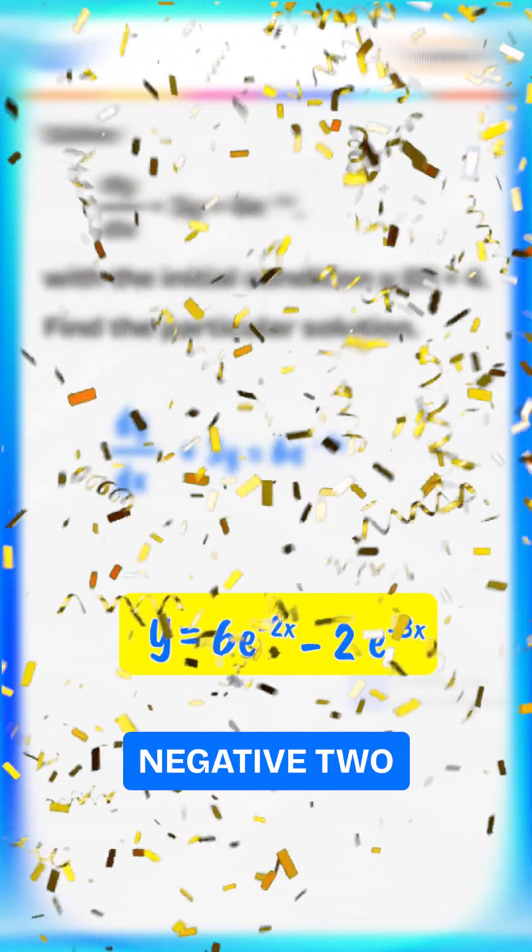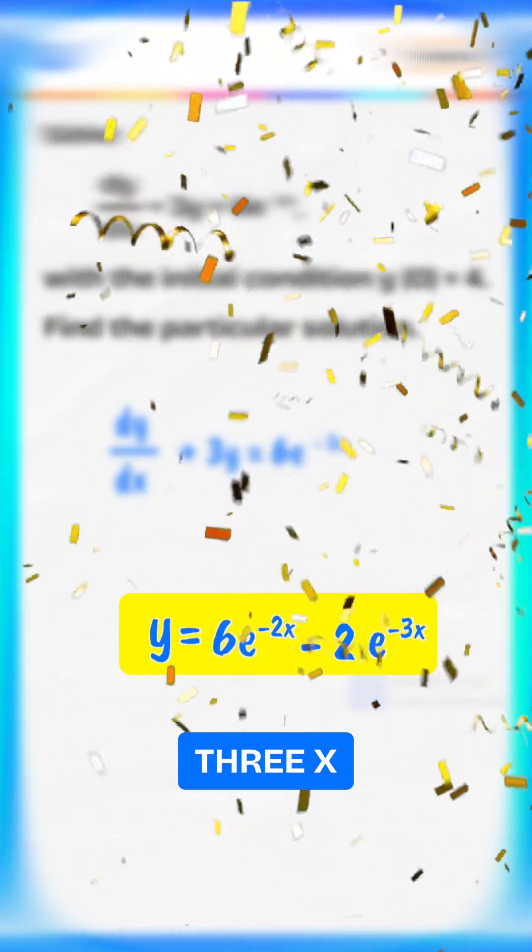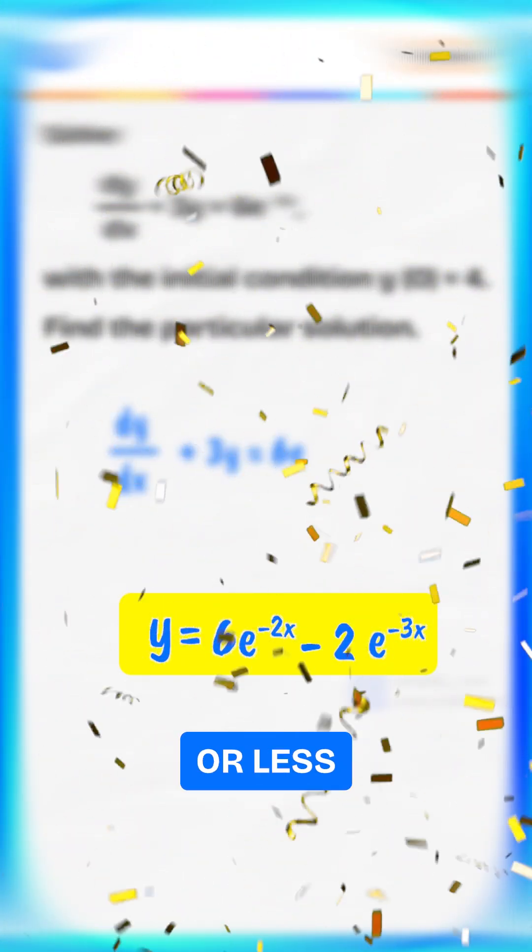Finally, y equals 6e to the power negative 2x minus 2e to the power negative 3x. Follow for more math hacks in 60 seconds or less.